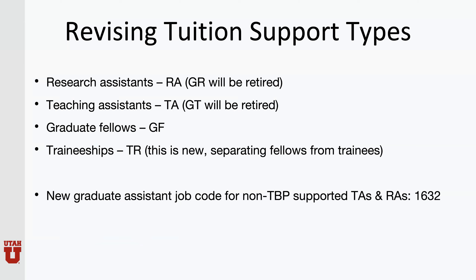Graduate fellows, where grad fellows are paid every semester through the scholarship administration system, will continue to be designated as GF. New this year will be traineeships, or TR. This is where your students are research assistants or participants in a training program paid on a training grant, where their support is not allowable as a payroll source, and they are paid on a monthly recurring payment through the Office of Income Accounting. Also new this year, the university has created a new job code, 1632, for graduate assistantships not associated with tuition benefit.